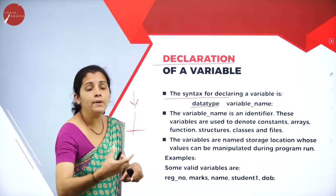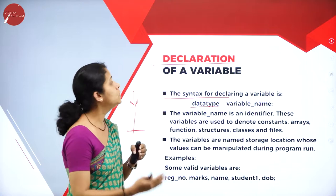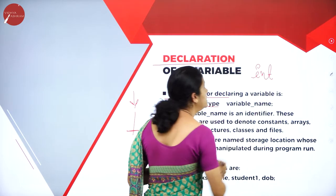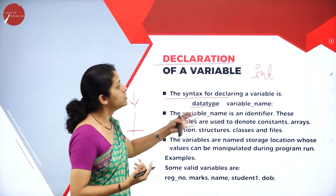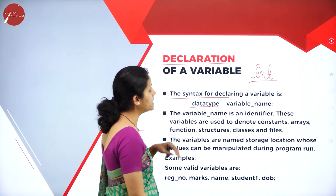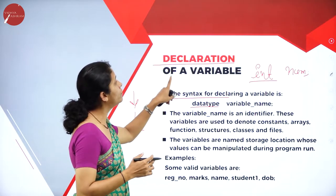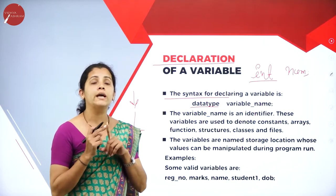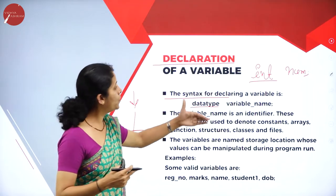If I transfer this example to a C++ program, I am going to have a data type — that is integer. Not only integer; I can have float, double, long, character, or string. Here I will consider only the integer data type. So, int is my data type and I write the variable name. The syntax for declaring a variable is: first I write the data type — which type of data I am going to use — and then the name, that is the variable name.